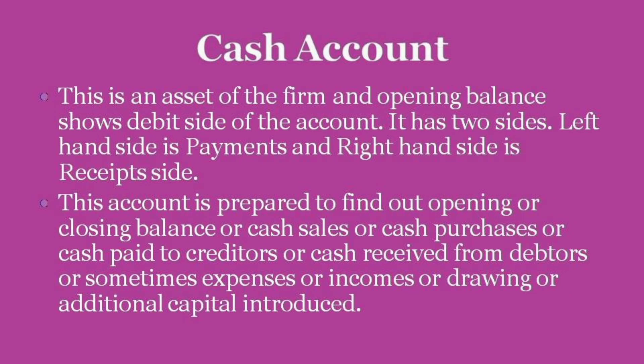Sixth step is preparation of cash account. This is an asset of the firm and opening balance shows debit side of the account. It has two sides: left-hand side is payments and right-hand side is receipts. This account is prepared to find out opening or closing balance, cash sales, cash purchases, cash paid to creditors, cash received from debtors, or sometimes expenses, income, drawings, or additional capital introduced.